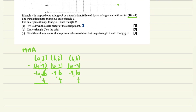After multiplying by 1/2: (-10,6) becomes (-5,3); (-4,6) becomes (-2,3); (-4,10) becomes (-2,5).